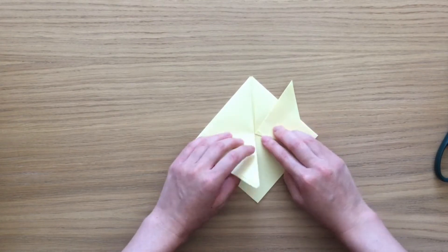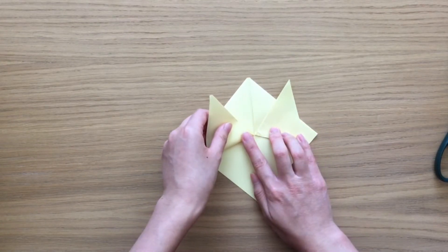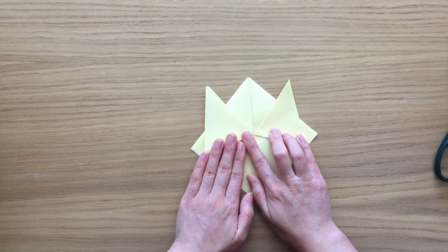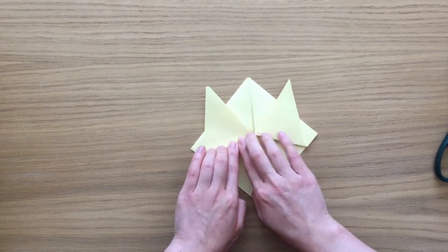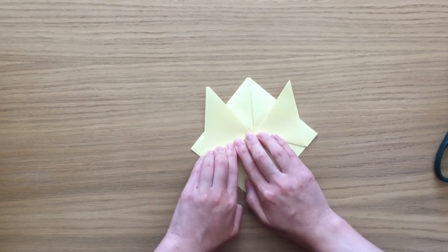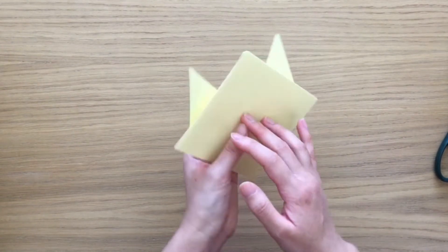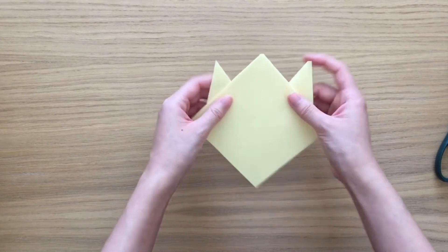Now the tricky bit here is getting both sides to be the same size, because I'm probably guessing you don't want your cat to have wonky ears. Flip it over just to check that they're the same size. Yeah, that looks good.